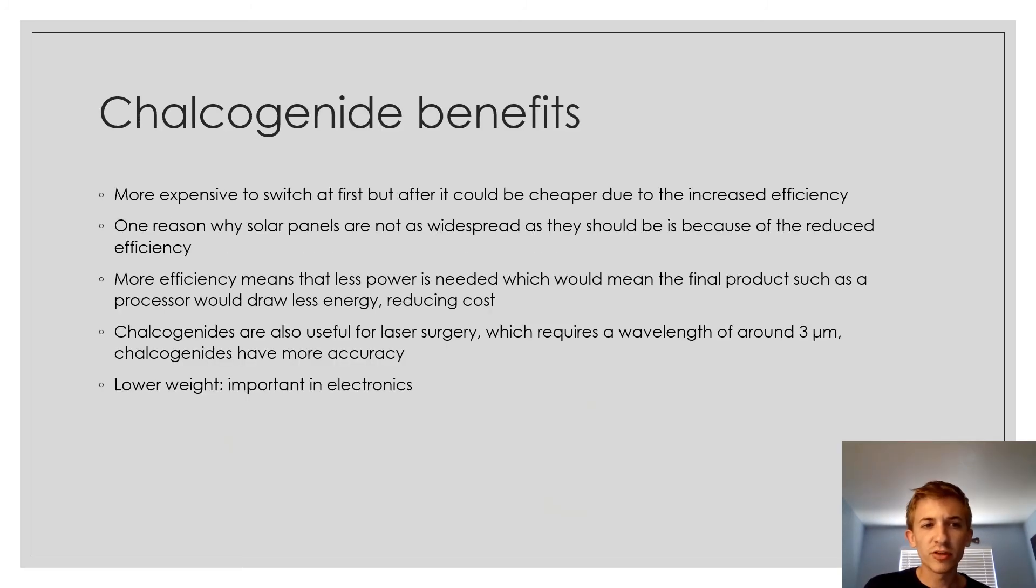These are some benefits of the chalcogenides overall. They're more expensive to switch at first, but after could be cheaper due to the increased efficiency. One reason why the solar panels are not as widespread as they should be is because of the reduced efficiency. If we increase the efficiency, they'll be cheaper. More efficiency means that less power is needed, which means that the final product could draw less power, which also reduces cost.